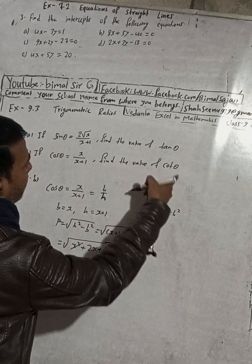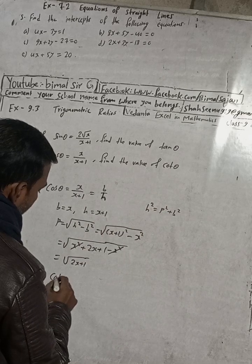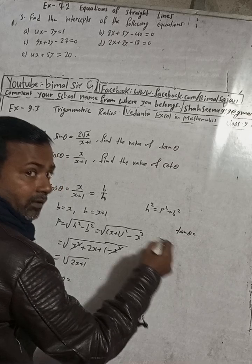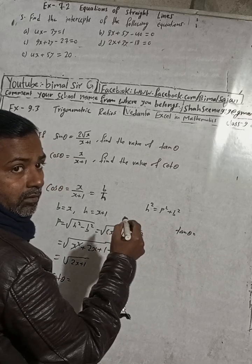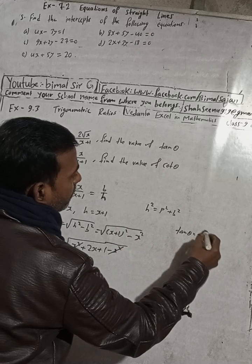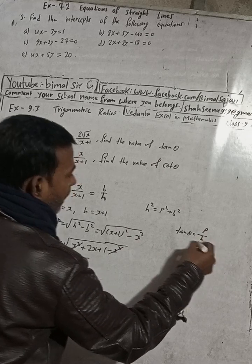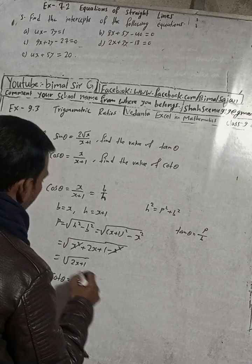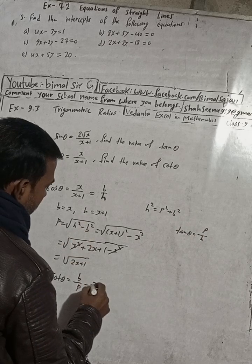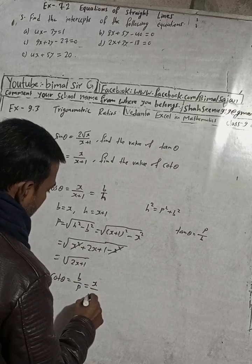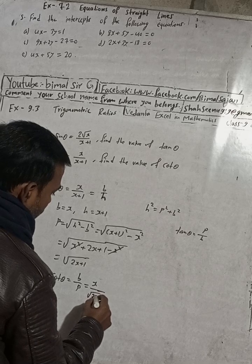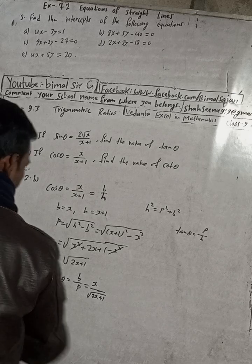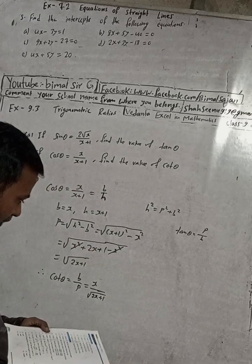Therefore we can now find the value. tan theta value is P by B, and cos theta means B by h, which gives us B by P. B is equal to x, and P is equal to root under 2x plus 1. Checking the answer in the book: x by root under 2x plus 1. This is the complete solution.